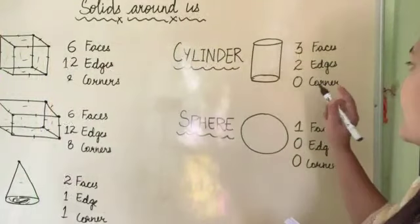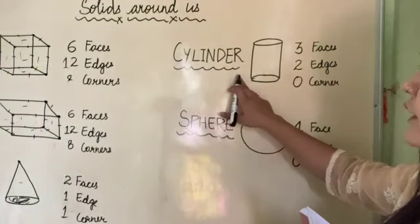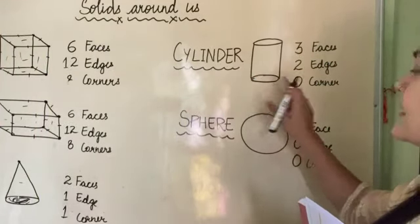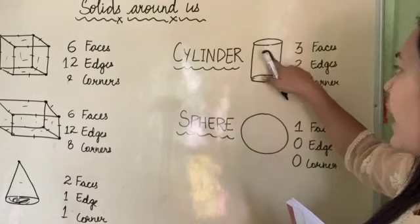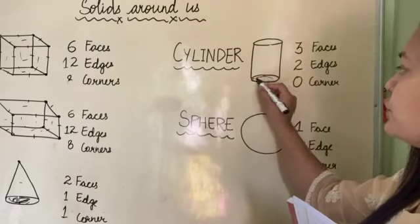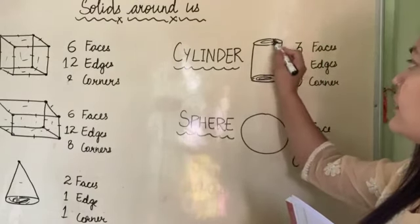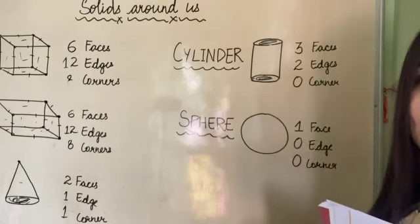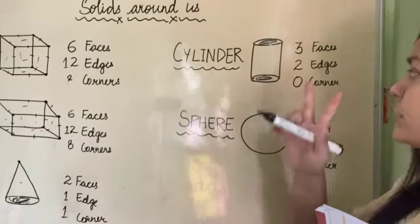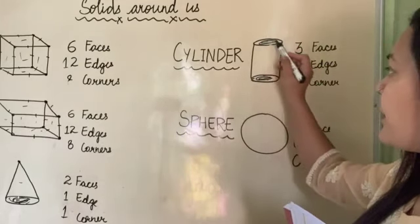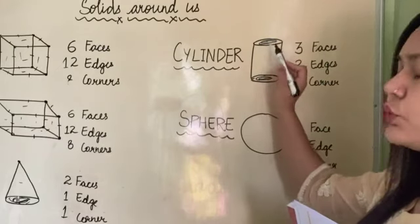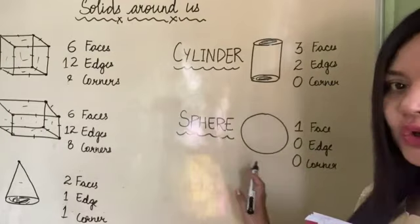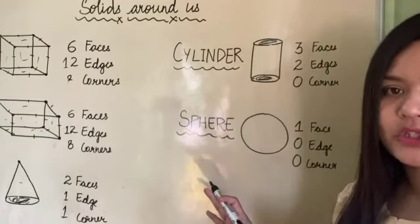Our next solid shape is cylinder. This is cylinder. Cylinder has how many faces? It has three faces - one, two and three. And how many edges? Two edges - this one and this one. And how many corners? There are no corners in cylinder shape.